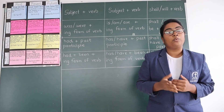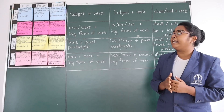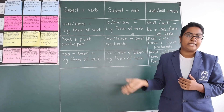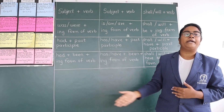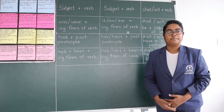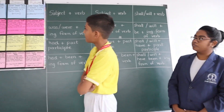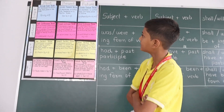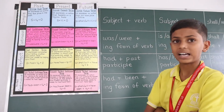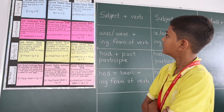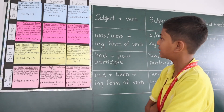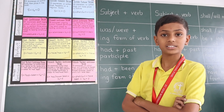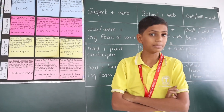Now let's move on towards the examples. Who is ready to give an example of simple past tense, simple present tense, and simple future tense? Ayush, please come ahead. The example of simple past tense is: my brother saw a movie yesterday. The example of simple present tense is: I work in London. The example of simple future tense is: they will be sending us an email.